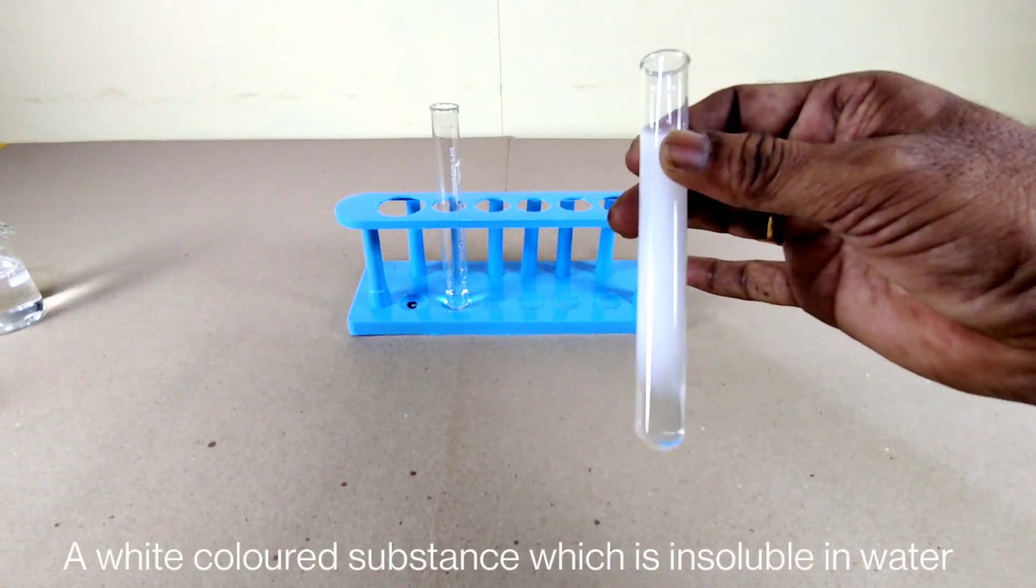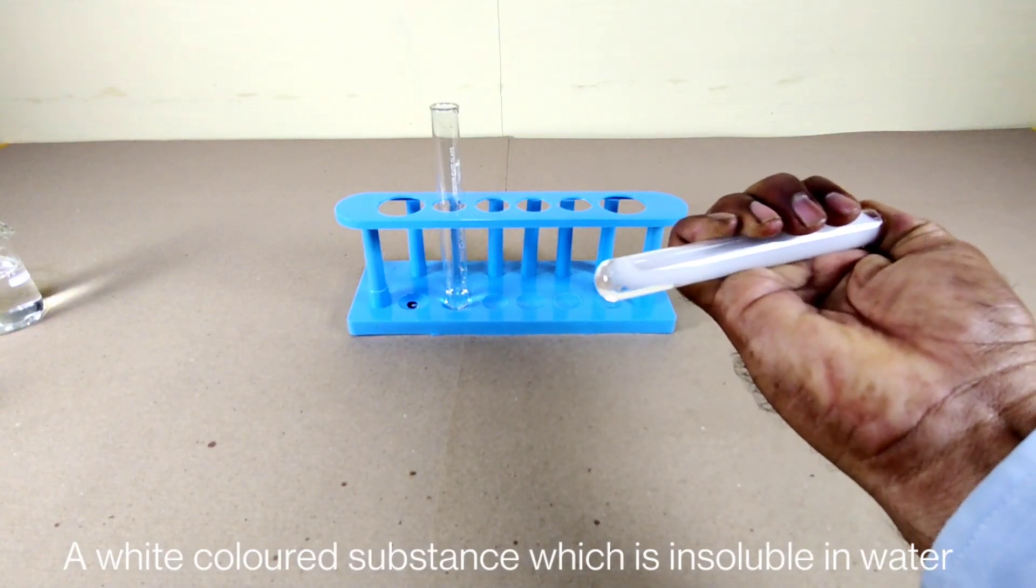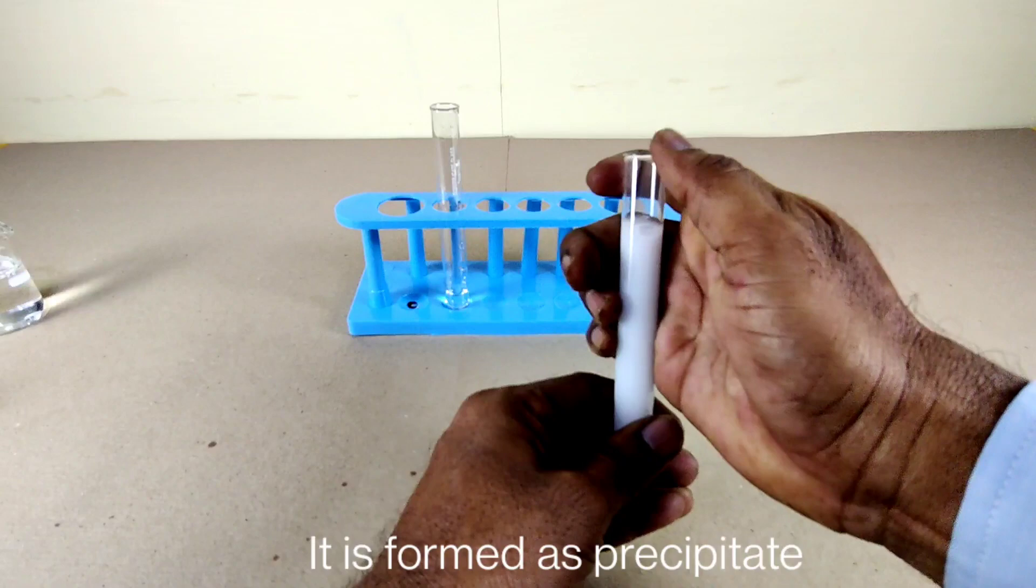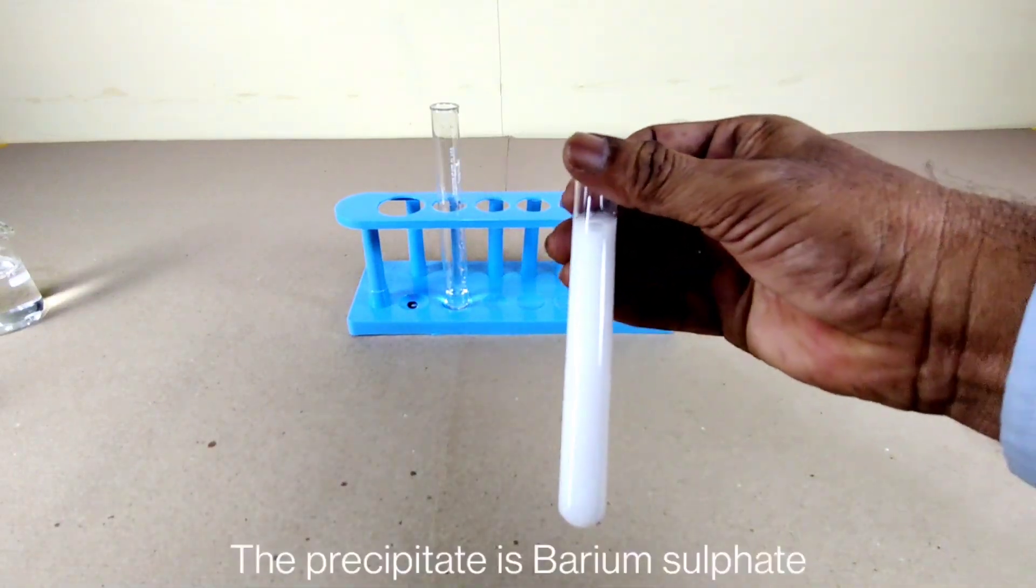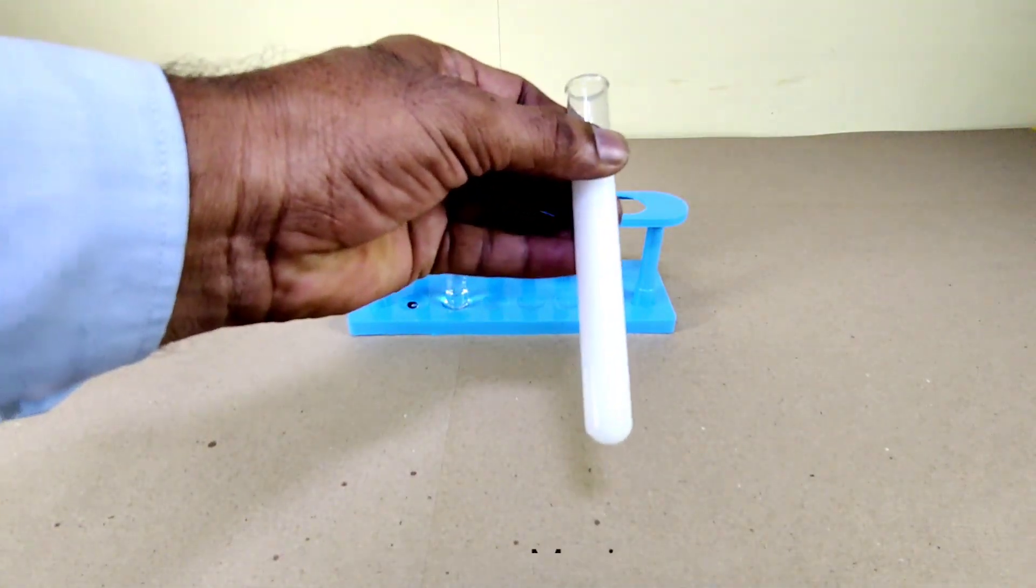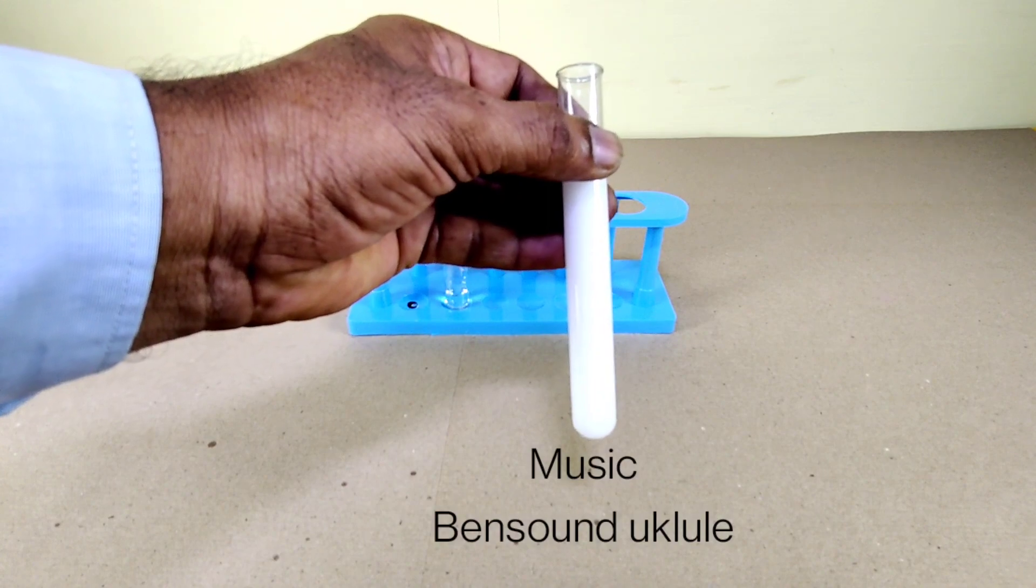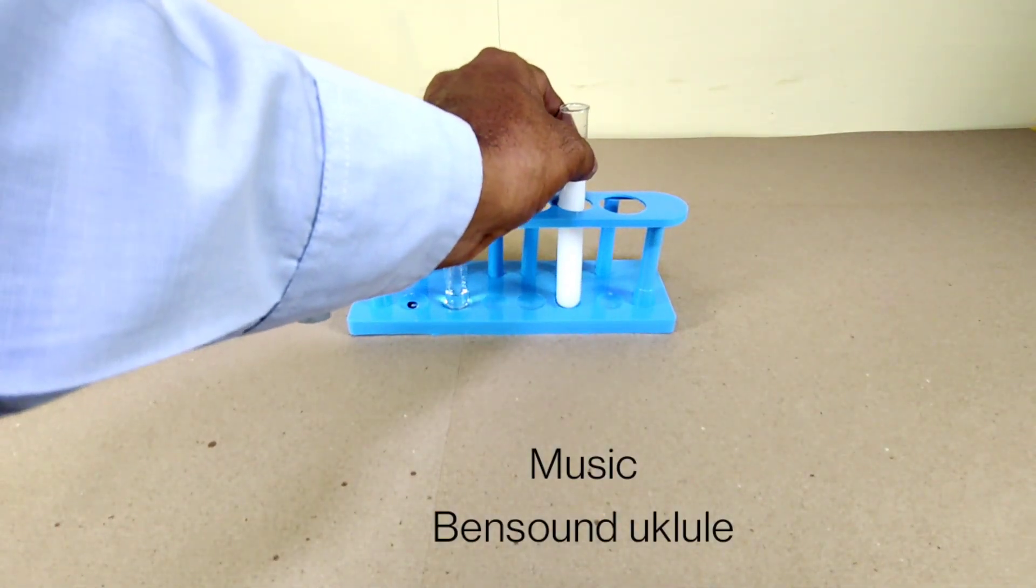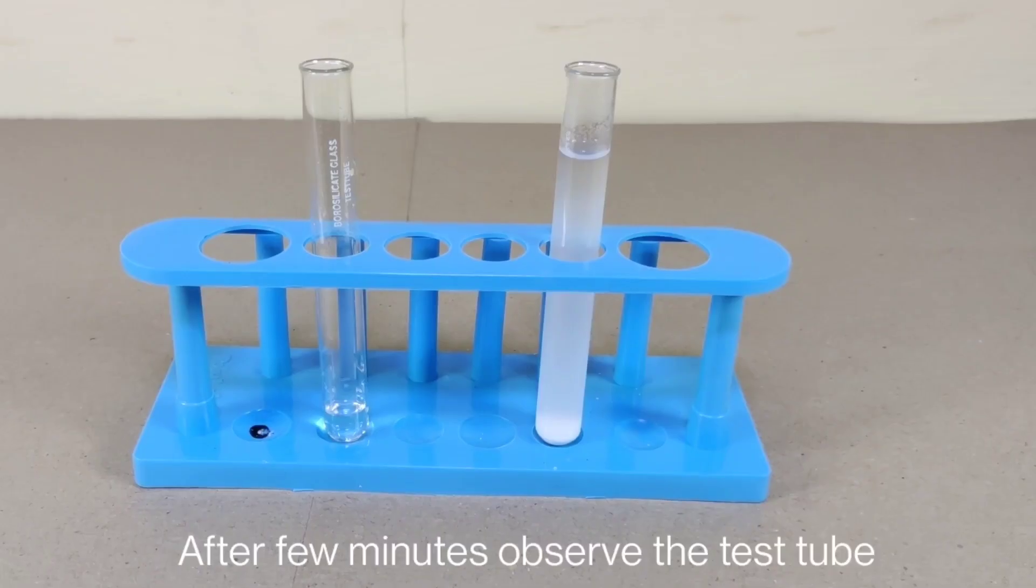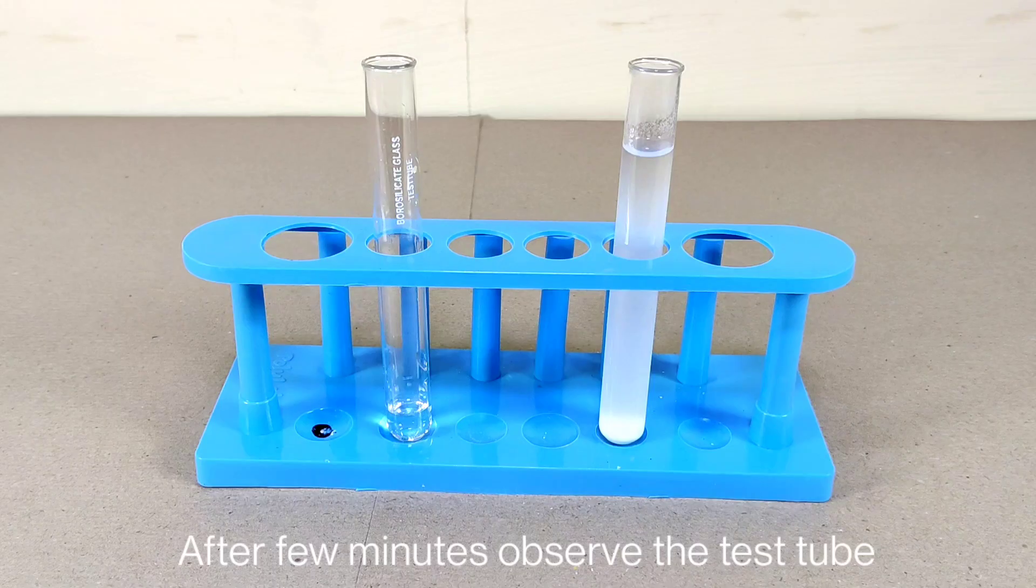A white colored substance which is insoluble in water is formed as a precipitate. The precipitate is barium sulfate.